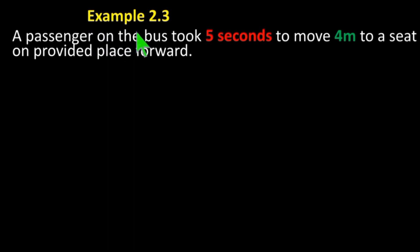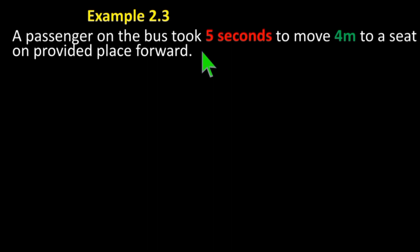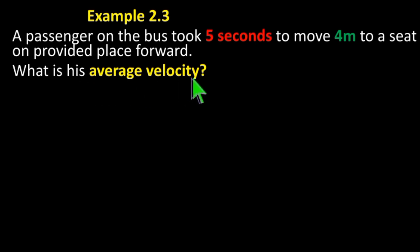A passenger on the bus took five seconds to move four meters to a seat on the provided place forward. What is his average velocity?